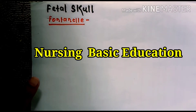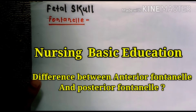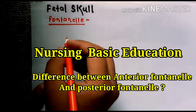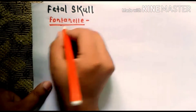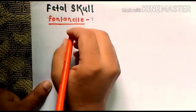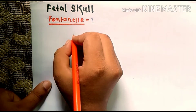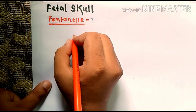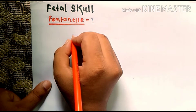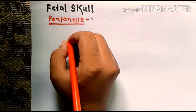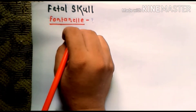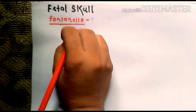Hi, this is our friend and welcome to nursing basic education. Today we will read about the difference between anterior fontanelle and posterior fontanelle. First, we need to know what a fontanelle is — a space between the bones of the skull in an infant or fetus where ossification is not complete and the sutures are not fully formed. Ossification means the process of formation of bones in the skull.